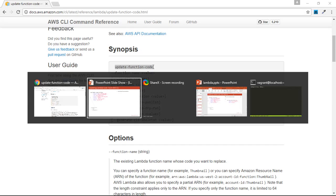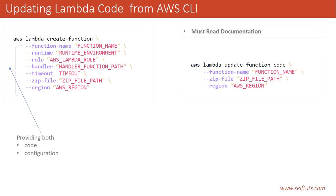Going to our slide, we can see the syntax to update our function. AWS is the CLI tool, Lambda is the service, and update-function-code is the action we want to perform. We then provide the name of the function we want to update — in our previous video we created a function named hello-world — along with the path of the zip file and the region.